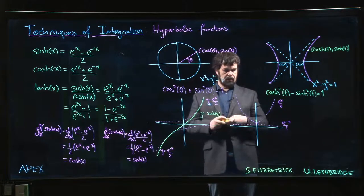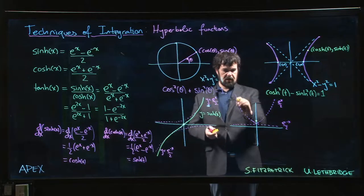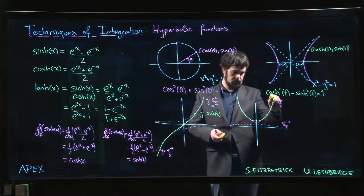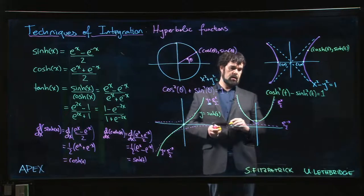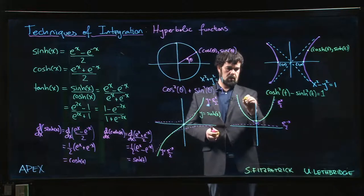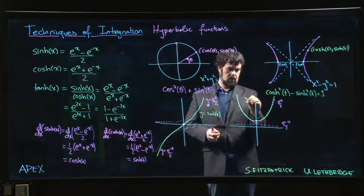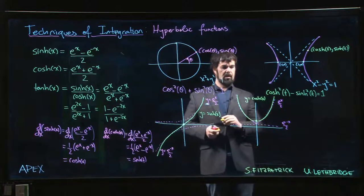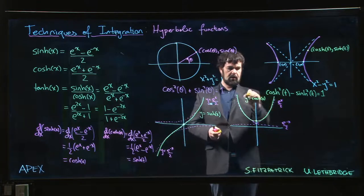And so what you get is something that looks like this. Okay, so that's the hyperbolic cosine function. Probably should be a little bit steeper on the sides.